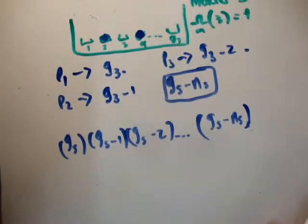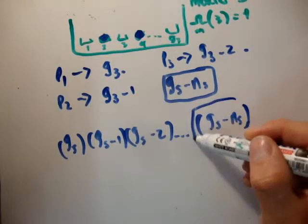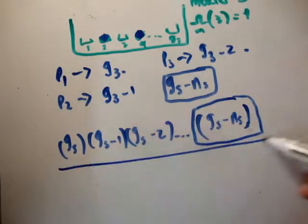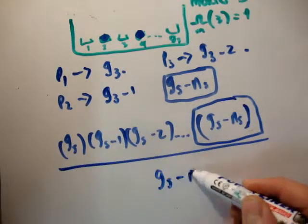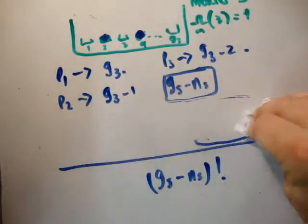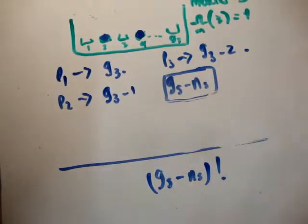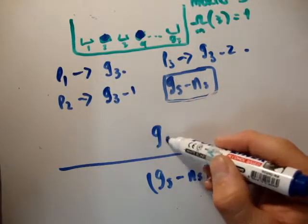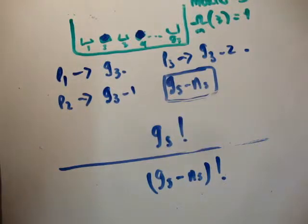So, the only way to make this a factorial is if we make this a factorial, which means we need to divide by g_s minus n_s factorial. And if we divide by g_s minus n_s factorial, the top can just be written as g_s factorial. Okay? Pretty straightforward.